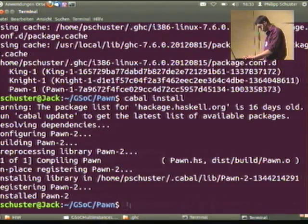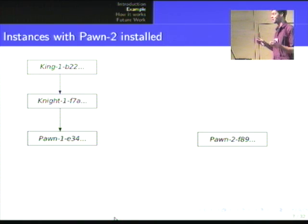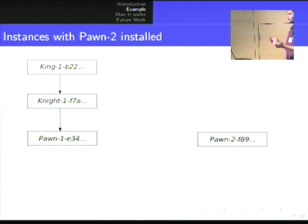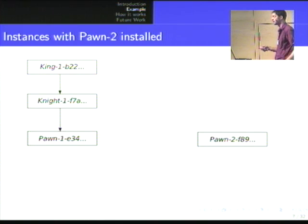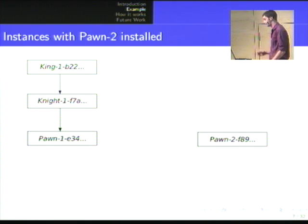So what we should have is something like this — we have this pawn package. I have to put a disclaimer here: normally, if you wanted to install the queen package, you wouldn't do this bottom-up by first installing its dependencies. You would type cabal install queen, and it would figure out the dependencies it needs. But these toy packages aren't on Hackage, so this is impossible. Also, from what I've heard, the package server is down, so it wouldn't work.